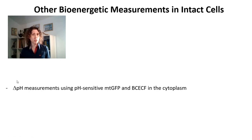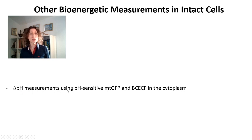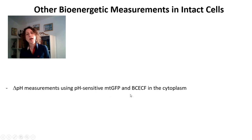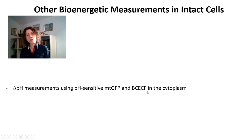So under some conditions, you might want to measure delta pH. You can measure delta pH by using mitochondrially encoded proteins that are pH sensitive, and there are a number of fluorescent proteins that are pH sensitive. Most green fluorescent proteins are sensitive to pH, but there are some that are designed to be specifically pH sensitive. Measuring mitochondrial pH with these proteins, and then accumulating in the cell the esterified form of BCECF — a fluorescent probe that gives you the measurement of pH in the cytosol — and then comparing these two pHs, you can get delta pH if you need that measurement.